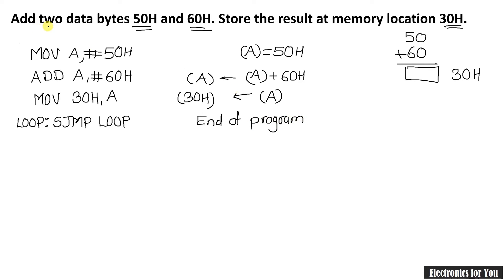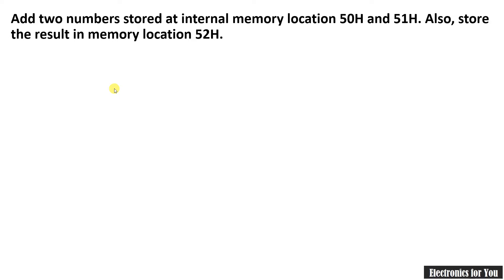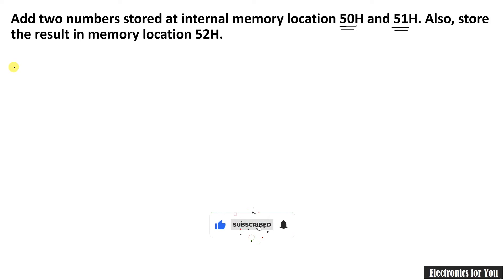This program adds 50h and 60h and stores the result at 30h. Our next program is to add two numbers stored at internal memory locations 50h and 51h. We don't know the actual numbers — we only have the memory locations — and we have to store the result at memory location 52h.